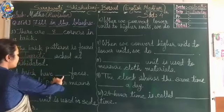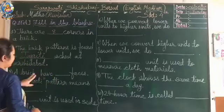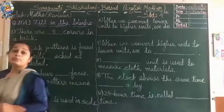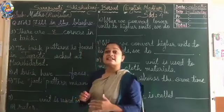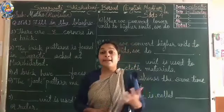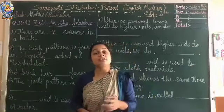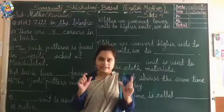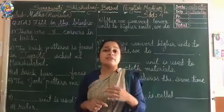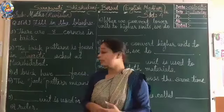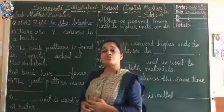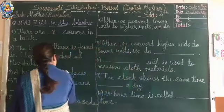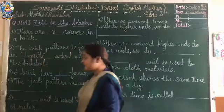Third number: a brick has blank faces. So how many faces does a brick have? In the first chapter video I showed you the first face, second face, third, fourth, fifth — so total there are six faces. The answer will be six faces.